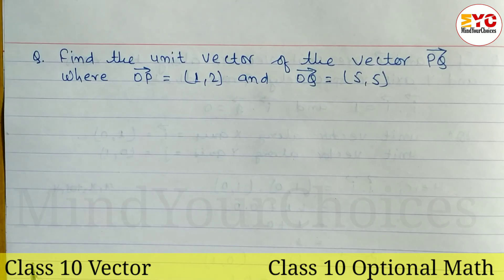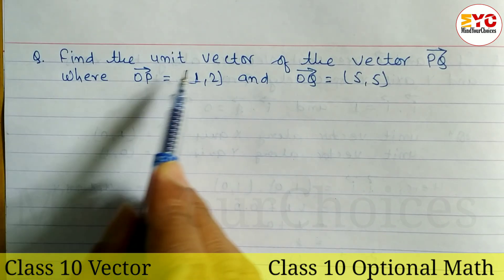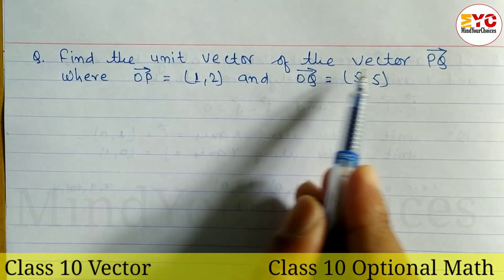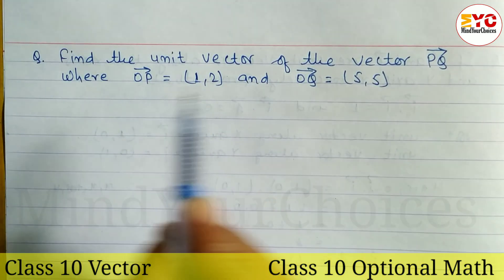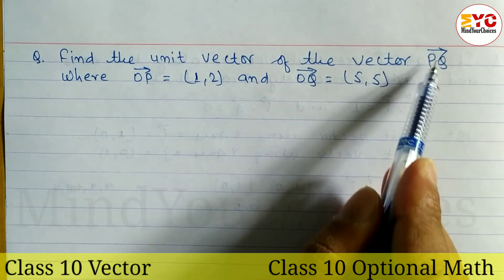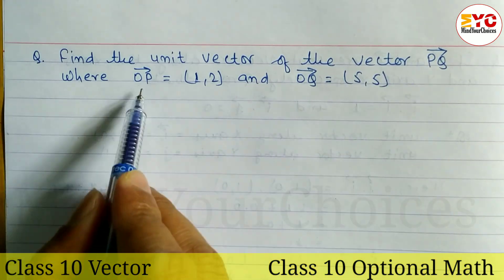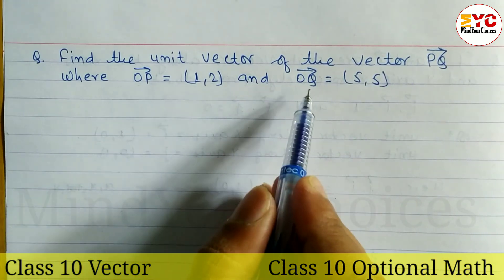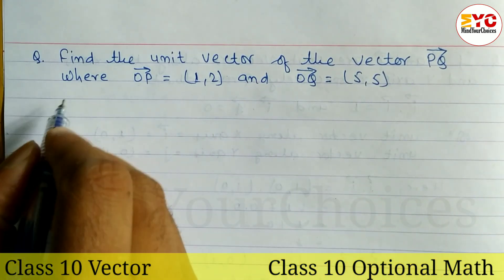Question from class 10 vectors. We have to find the unit vector of the vector PQ, where OP is given and OQ is given.